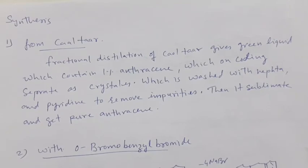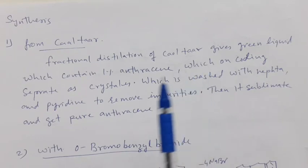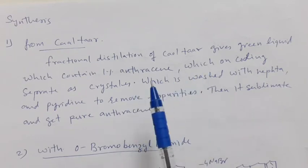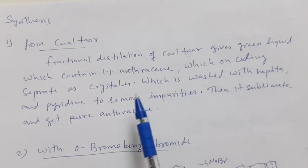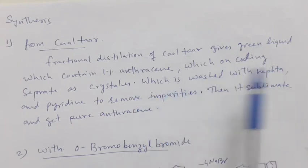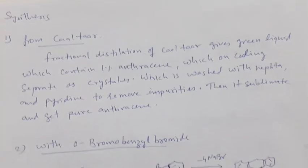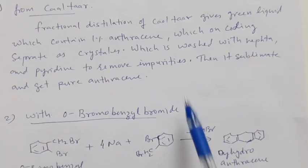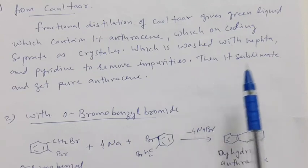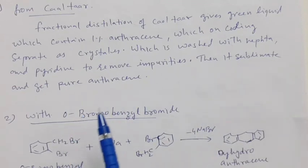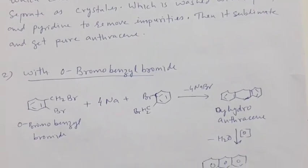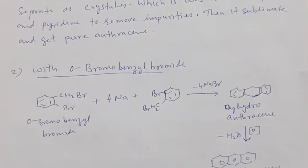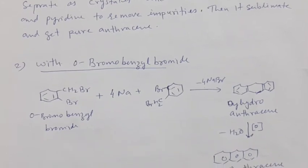As for the synthesis of anthracene, it can directly be obtained from coal tar. The coal tar on distillation gives a green liquid which contains 1% of anthracene, which on cooling separates into crystals. The crystals are washed with naphtha and pyridine so that impurities are removed, and then these crystals sublimate to give pure anthracene.